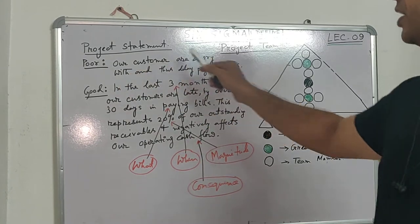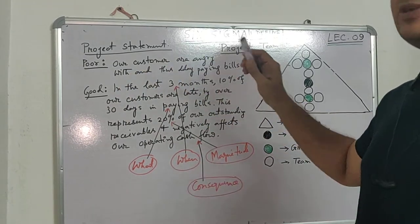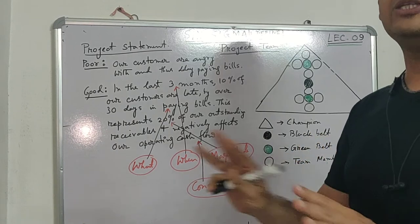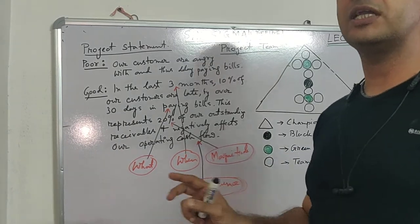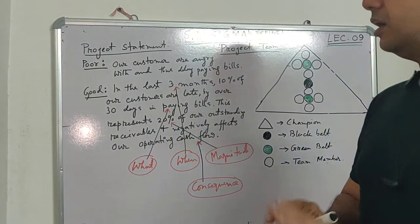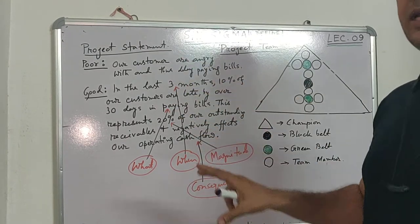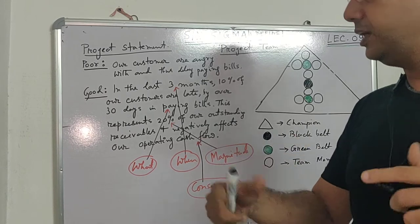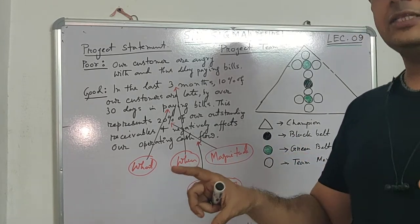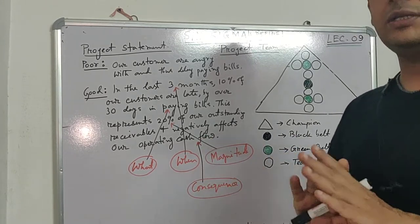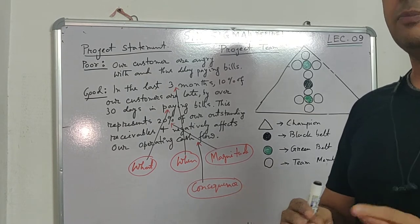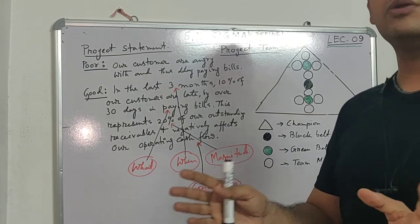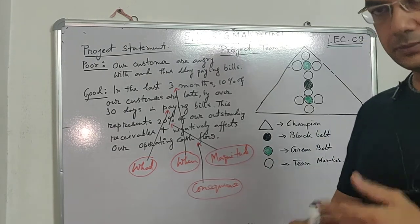In this way we can formalize a project statement after CTQ, QFD, brainstorming, and voice of customer processes. Finally, we need to build our statement in a way that covers what the problem is, what is the magnitude, by when we are going to address it, and what will be the benefit after addressing it.